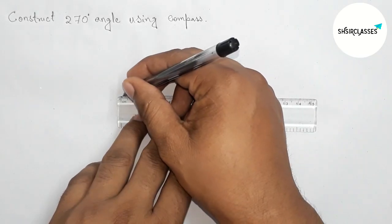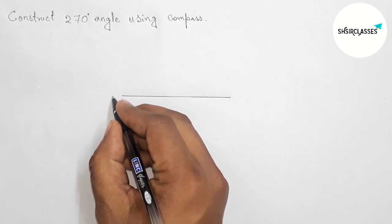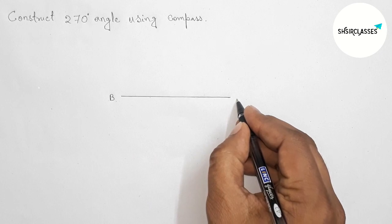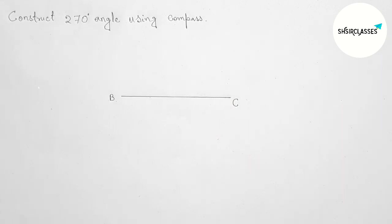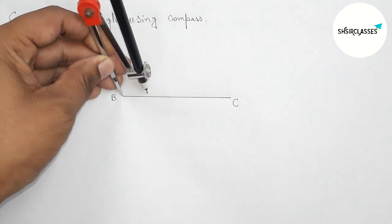First of all, let us draw here a line segment of any length and take two points here, taking point B and here C. Okay, now for the 270-degree angle with the help of a compass, we'll put the compass